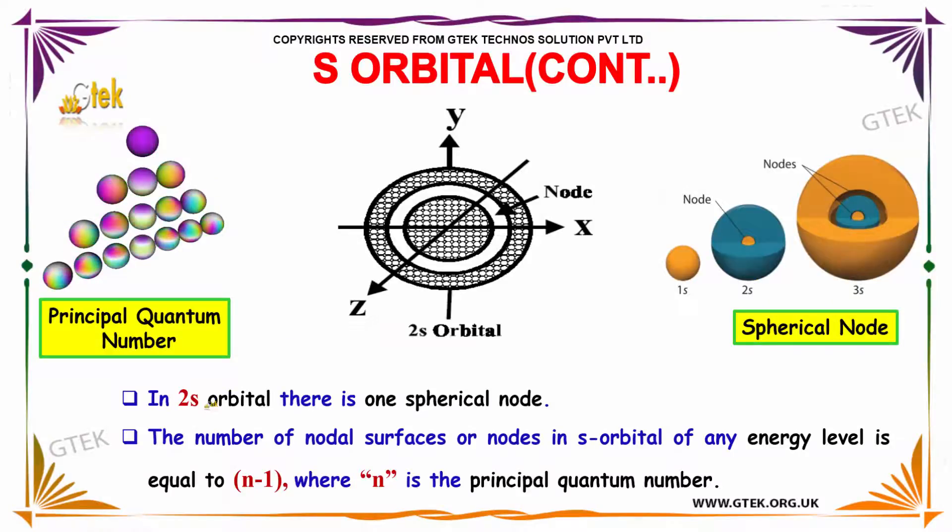In 2s orbital, there is one spherical node. The number of nodal surfaces or nodes in S-orbital of any energy level is equal to n-1, where n is the principal quantum number.